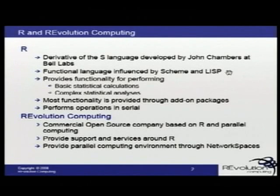R is a functional language for performing basic statistical analyses and calculations. It can do things like mean, standard deviation, variances, and it can also do very complex analyses such as linear models, linear mixed models, machine learning, neural nets, and other types of operations. Most of the complex functionality is provided through add-on packages that users develop. There's a very small core of roughly 20 individuals that work on R itself, distributed around the world, and then there are several thousand users who develop additional, more complex functionalities on top of the R language.